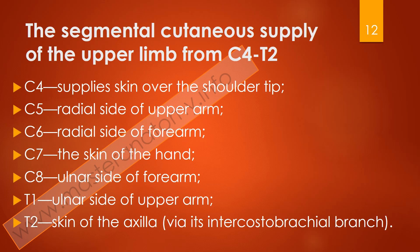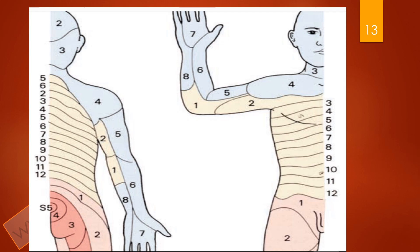The segmental cutaneous supply of the upper limb can be summarized as follows: C5 supplies the radial side of the upper arm around the deltoid; C6 supplies the radial side of the forearm; C7 supplies the skin of the hand; C8 supplies the ulnar side of the forearm; T1 supplies the ulnar side of the upper arm; and T2 supplies the skin of the axilla.